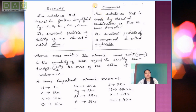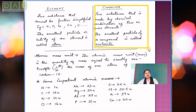In a compound, we can see that these are pure substances which can be made by the chemical combination of two or more elements. Those substances are called compounds. For example, in water, two atoms of hydrogen combine with one atom of oxygen to give a water molecule. The smallest particle or smallest entity of a compound is called a molecule.